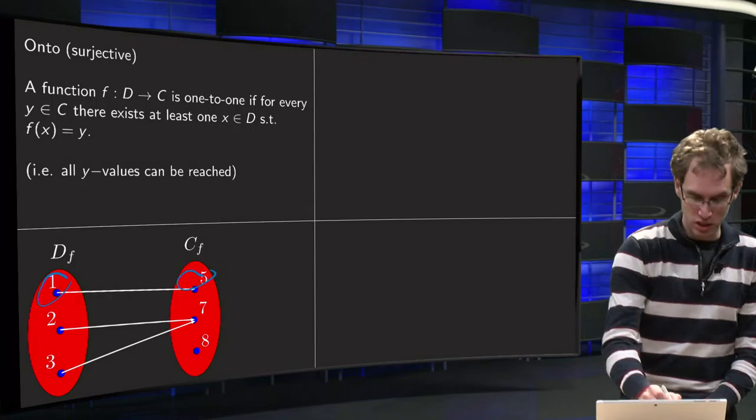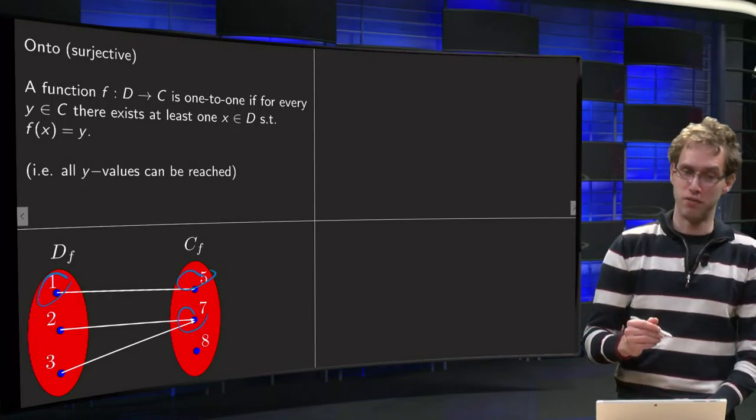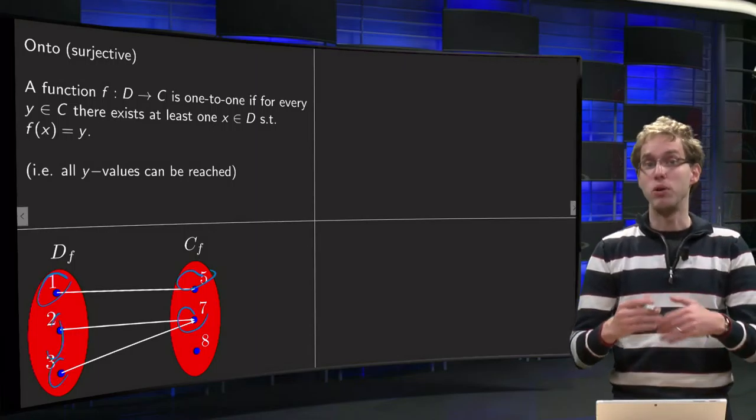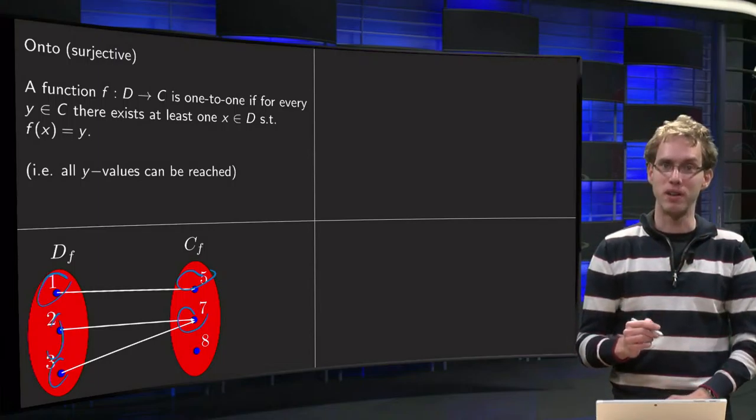We continue with the 7, the second value from the codomain. Can that one be reached? Yes, even by multiple values, by 2 and by 3. So you can reach it by at least one value, even by 2. So that is fine for the onto part.